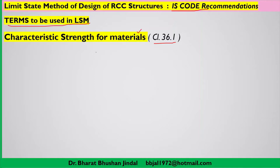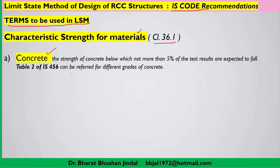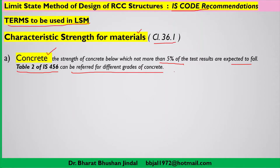We are using two types of material: concrete as well as steel. The code, in clause number 36.1, defines the characteristic strength of concrete as the strength below which not more than 5 percent of test results are expected to fall. This information was covered in earlier lectures. You can also refer to table number 2 in IS456, which lists the characteristic strength for different grades of concrete.